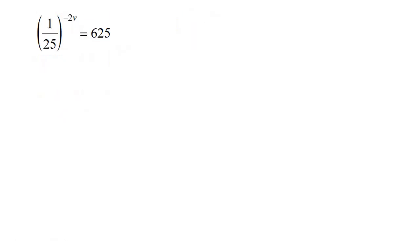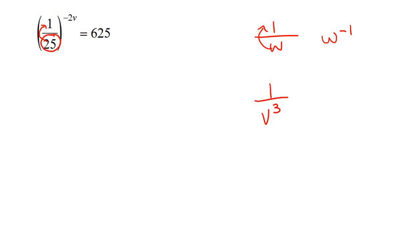Now, this one's pretty interesting. What we're going to do here is bring this 25 up to the top. If you have something like 1 over w, and you bring that to the top, then it has to become a negative. For example, if you had 1 over v to the 3, then it would have to become v to the negative 3 if you take it to the top. So, this is currently 25 to the power of 1, so if you bring it to the top, it's going to become 25 to the power of negative 1.